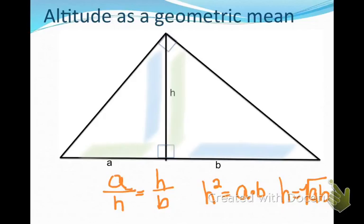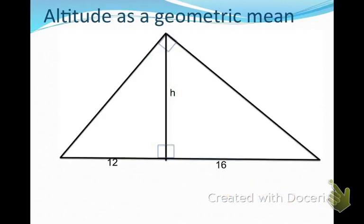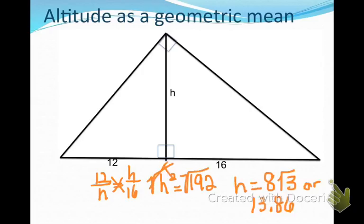So let's try this. If I have this similar right triangle, I could say 12 is to h in the same ratio as h is to 16. Cross multiply and I get that h squared equals 192. Take the square root of both sides, and I would either answer in simplest radical form or as a decimal, depending on what I'm being asked.